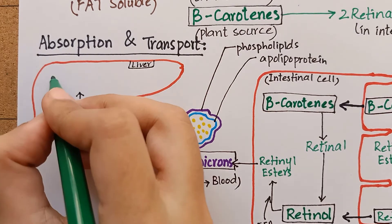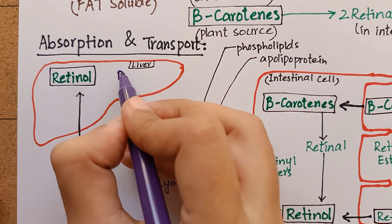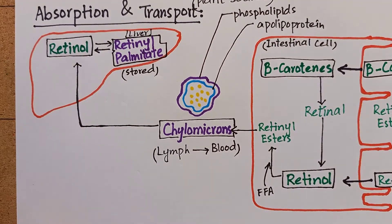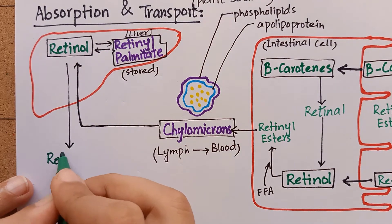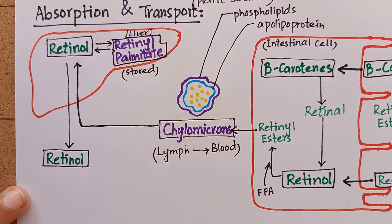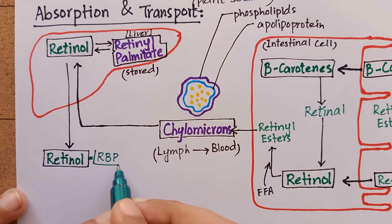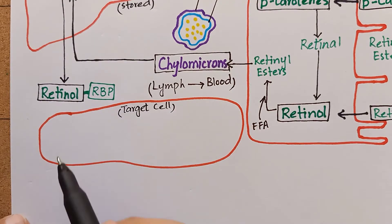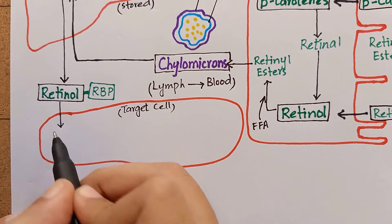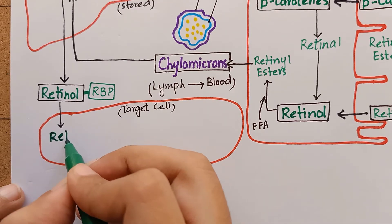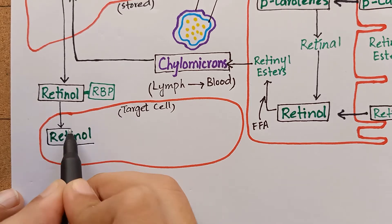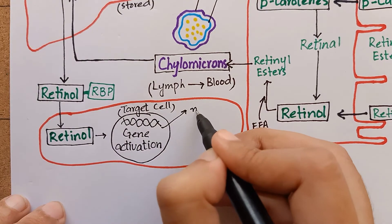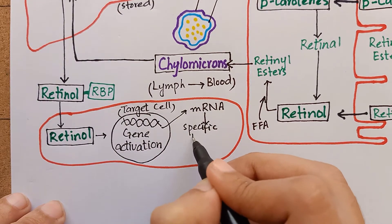The retinol esters contained in chylomicrons are taken up by the liver and stored as retinol palmitate. On the body's demand, vitamin A is released from the liver as free retinol. Retinol is transported to extra-hepatic tissue by plasma retinol binding protein. This retinol-retinol binding protein complex attaches to specific receptors on the cellular surface of target tissue, permitting retinol entry into the cell. Inside the cell, retinol stimulates gene activation and controls the production of specific proteins for several physiological functions.